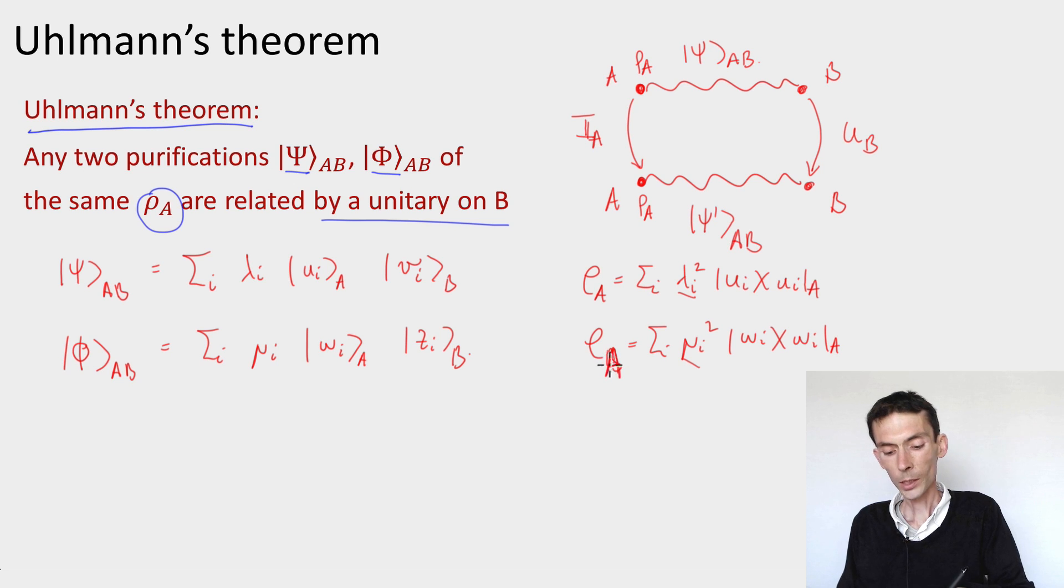Sorry this should have been ρ_A, as the singular values of the same reduced density matrix ρ_A, because that's the assumption of my theorem, which means that necessarily λ_i's are equal to μ_i's. So in this decomposition it should be the case that we have equality here.